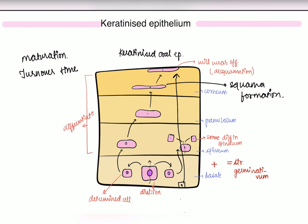Another important point: undifferentiated cells must remain in the basal layer; otherwise there will be instability. And for each cell that is cast off or worn off, a new differentiated cell must be formed to maintain balance.